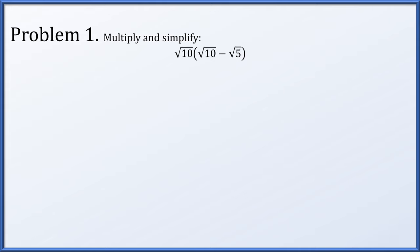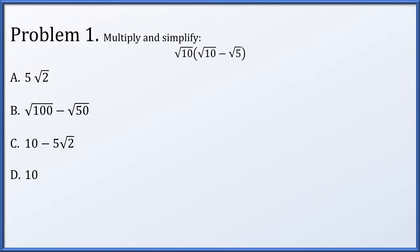In this problem, we're supposed to multiply and simplify the expression, and we are given four options. If we distribute root 10, we end up with root 10 times root 10 minus root 10 times 5. The square root of AB equals the square root of A times the square root of B, so these terms can be combined as the square root of 10 times 10 and the square root of 10 times 5.